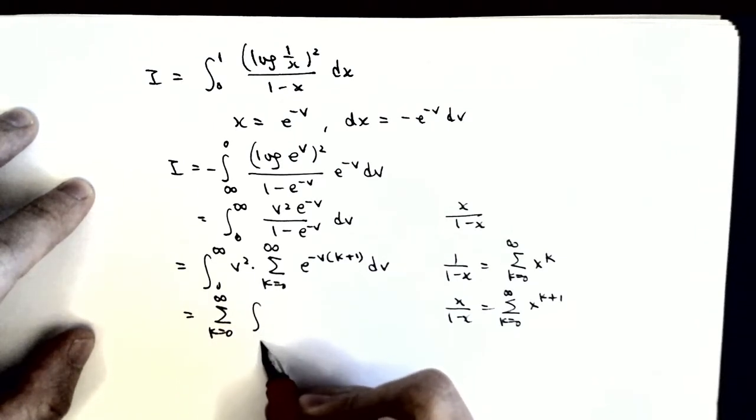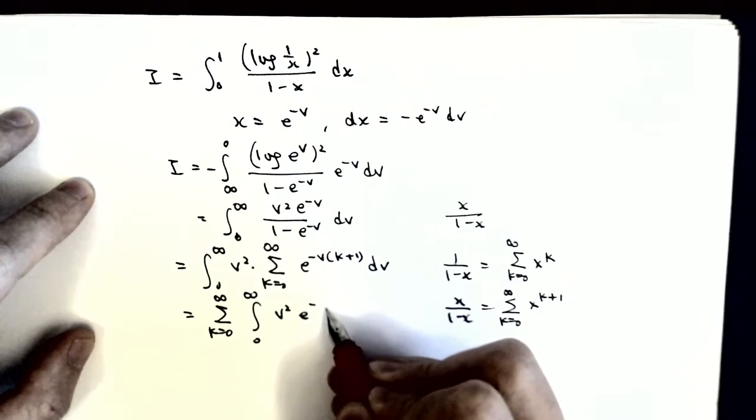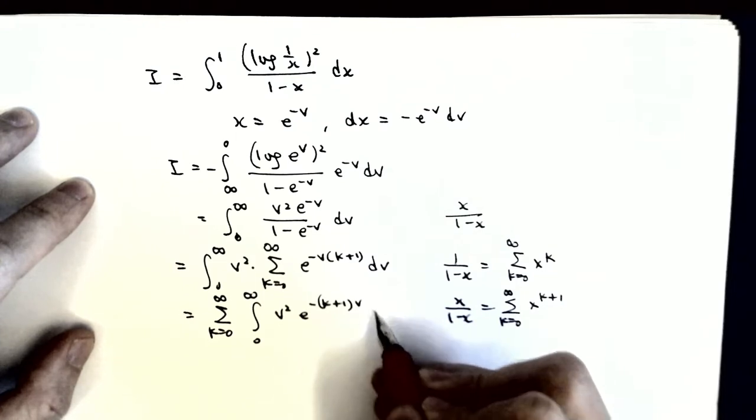And what we have is k plus 1 here, and then v squared dv.